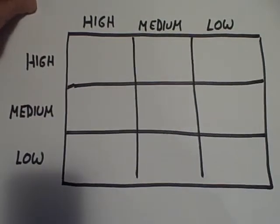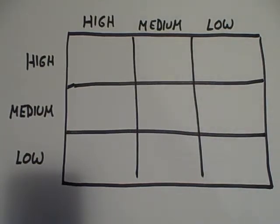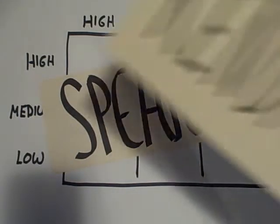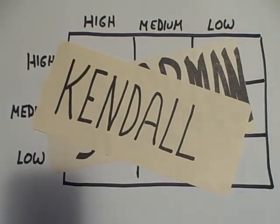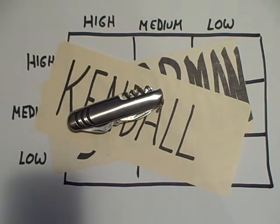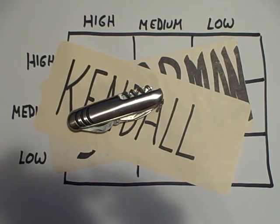Now, suppose we have two ordinally scaled variables — high, medium, and low. Instead of using the chi-square, we could use the correlation coefficient known as Spearman's rho, or a correlation coefficient known as Kendall's tau. Those would be better alternatives to chi-square. So, like the Swiss Army knife, chi-square is useful, but there are better approaches for us to learn.